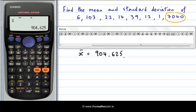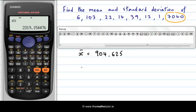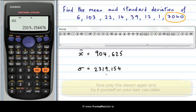The other piece of information I wanted was the standard deviation. So let's hit all clear and shift and 1 to bring up our menu. 4 for variance and sigma x is the one we want. So we select number 3 and then hit equals. And let's write out our answer here. And our standard deviation is 2319.154.